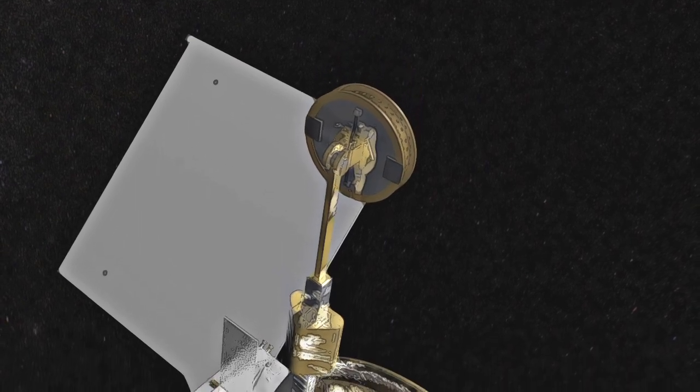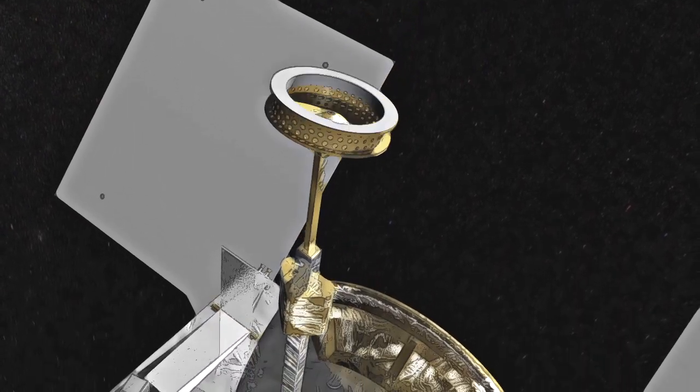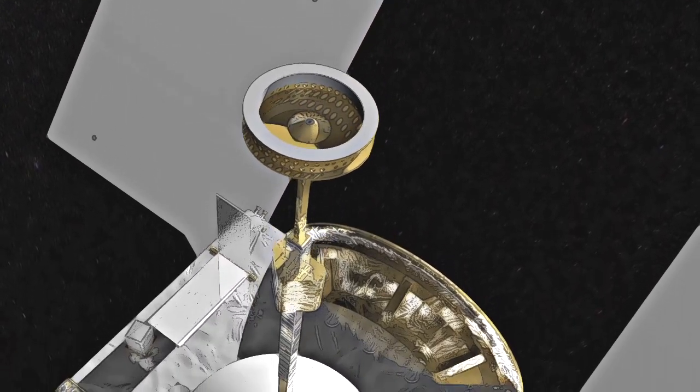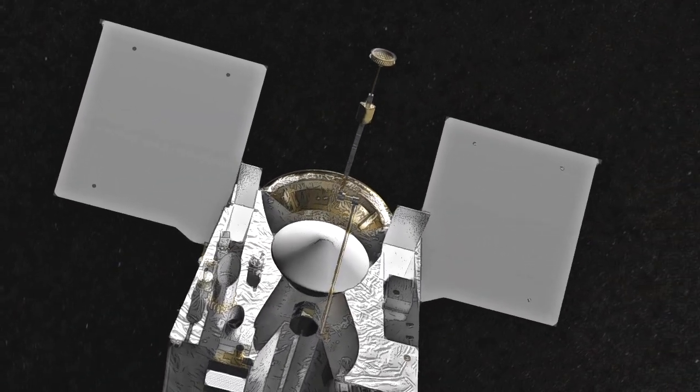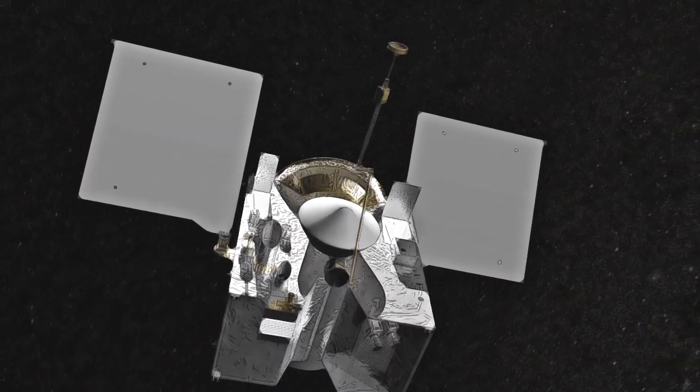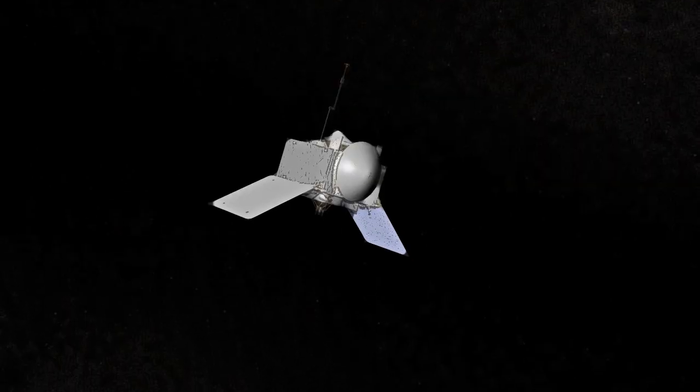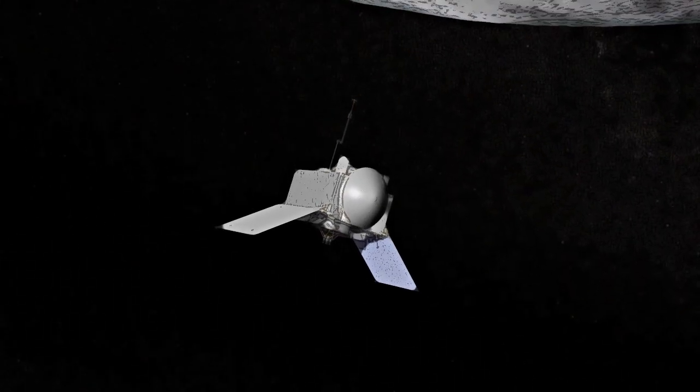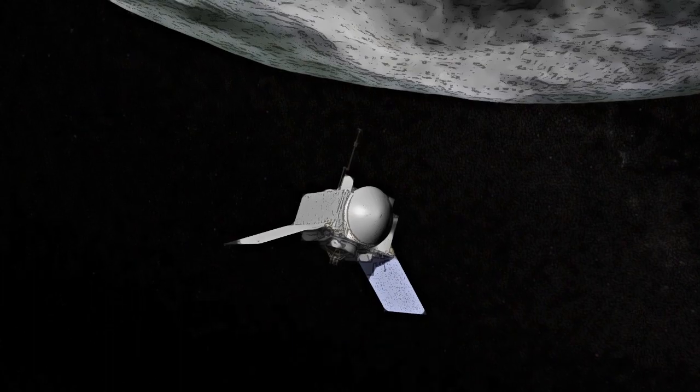The TAGSAM system consists of a robotic arm with an attached sampler head. Think of this as the spacecraft's arm and hand. But unlike the game we played as kids, where speed was a goal, the spacecraft needs to approach Bennu carefully to avoid damage, moving about 10 centimeters a second, slower than a human's walking pace.